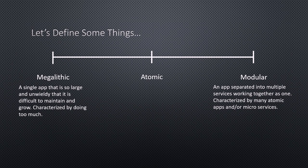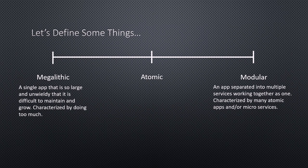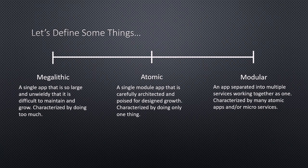In between these two different types — and this is a spectrum — somewhere in the middle is what I would like to term an atomic application. I'm trademarking these right now. An atomic application is a single module app that is carefully architected, well designed, and has a path forward for growth. It's characterized by doing one thing really, really well. It doesn't have lots of bloat in it yet.